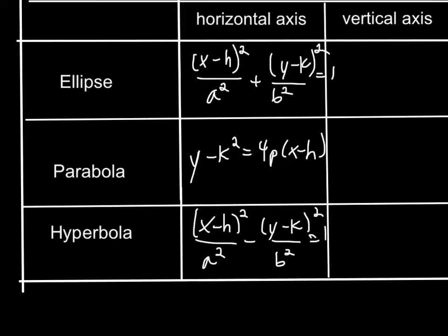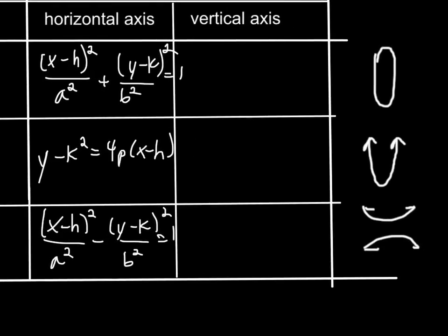For our vertical axis ellipse, we have x minus h squared over b squared plus y minus k squared over a squared equals 1.